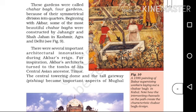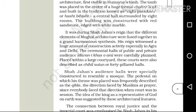The central towering dome and the tall gateway became important aspects of Mughal architecture, first visible in Humayun's tomb. When you observe this architecture, you can see these developments in Humayun's tomb — this is an important example.